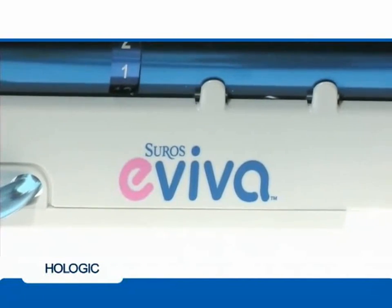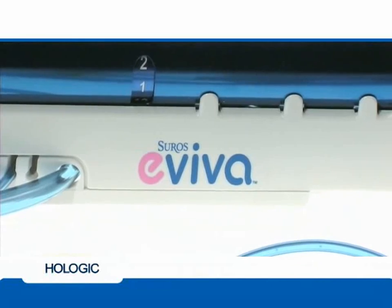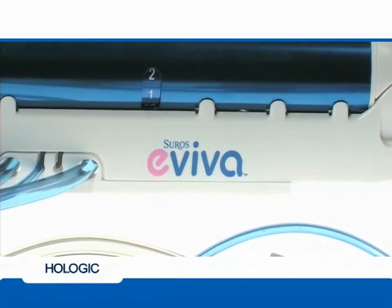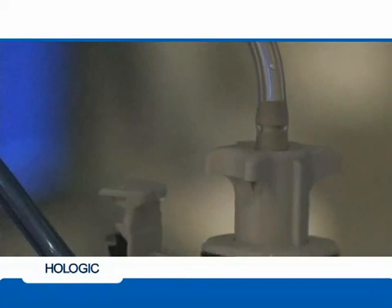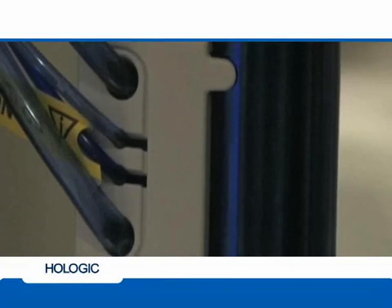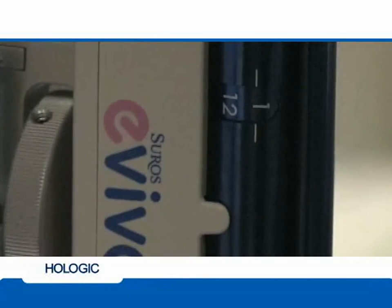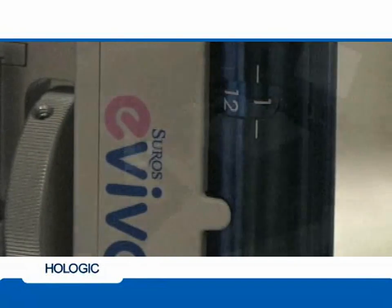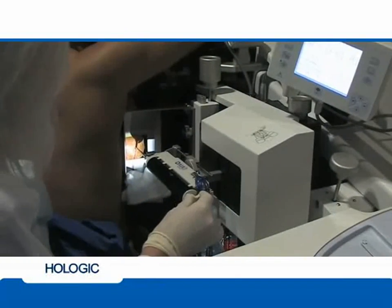Cores can be taken at any clock position at the discretion of the physician and depending on the location of the area of interest by rotating the thumb wheel. The position of the aperture opening or clock position is indicated by numbers located on the middle section of the device and by the tactile line on the thumb wheel.